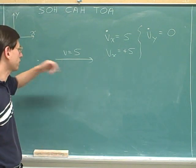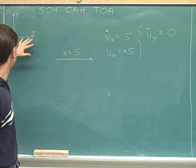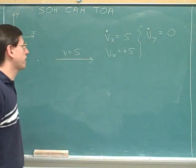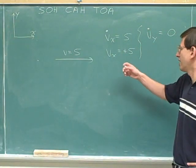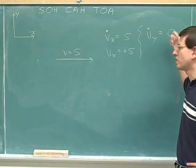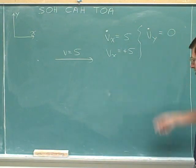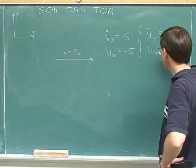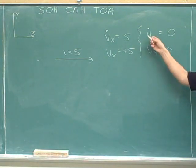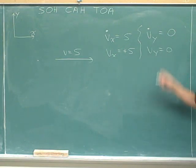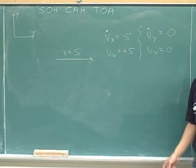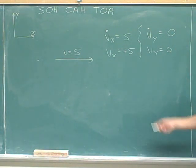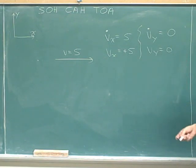We could draw a right triangle, but then the legs would not be parallel to the axes, so there's no useful right triangle here. Fortunately, we don't need one, because it's obvious that the x-component is 5 and the y-component is 0. When something is 0, there's not much distinction between the sign and the magnitude — both are 0. Zero doesn't really have a sign, so it doesn't matter whether you're using the dot notation or not. Either way, it's just 0.